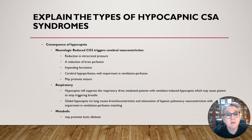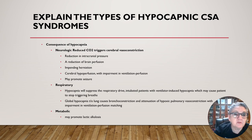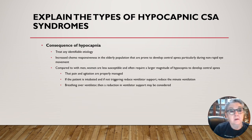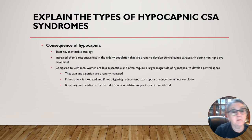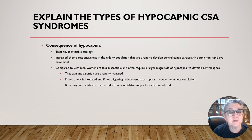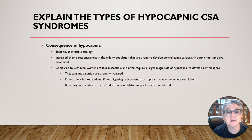Global hypocapnia throughout the lung causes bronchoconstriction and attenuation of hypoxic pulmonary vasoconstriction with impairment in ventilation-perfusion mismatch. Metabolically, this may promote lactic alkalosis. There is increased chemo responsiveness in the elderly, making them prone to develop central apnea during non-REM sleep. Compared to men, women are least susceptible and often require a larger magnitude of hypocapnia to develop central apnea.